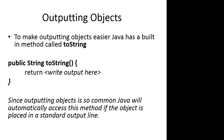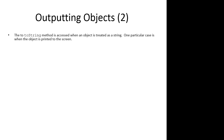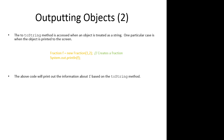So the question is, if Java is automatically accessing it, where is it getting it from? The toString method is accessed when an object is treated as a string. One particular case is when the object is printed to the screen. With a little piece of test code like this — what does this output to the screen? The above code will print out the information about f based on the toString method.